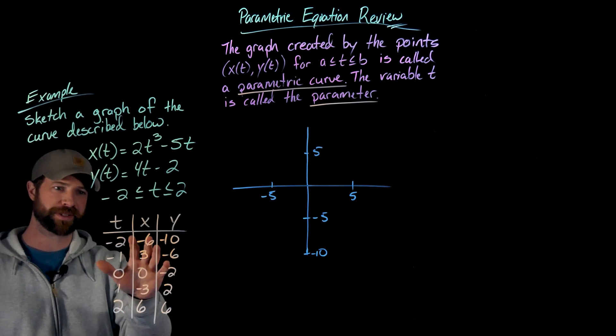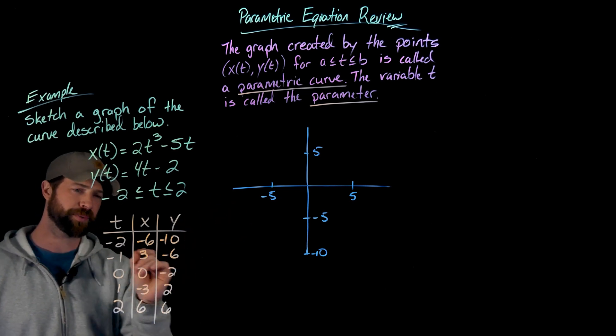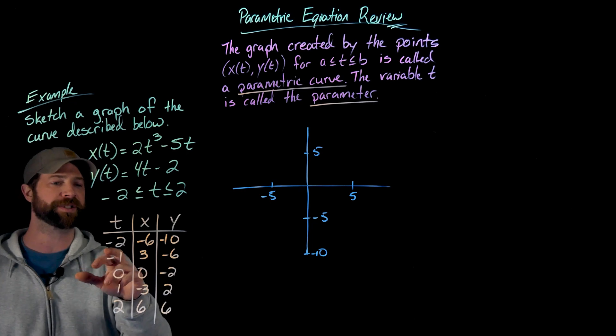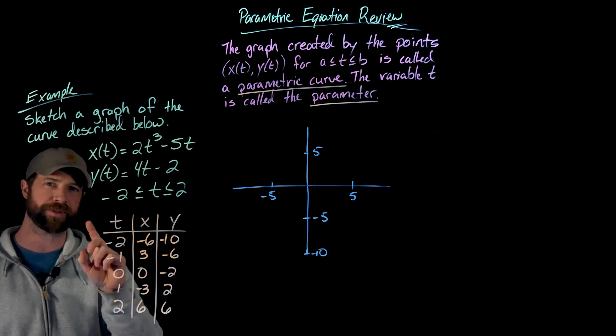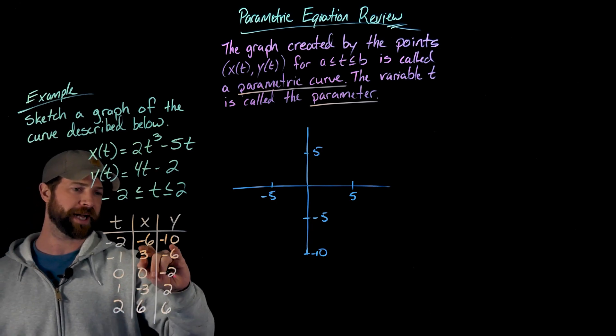So then I have these ordered pairs described by the parameters. What I'm going to do now is plot those. One thing importantly as I plot these, I'm actually going to label each of these with their parameter value, and you'll see the reasoning for this in a second.